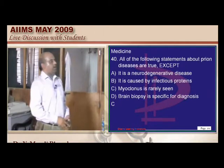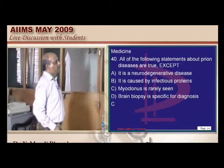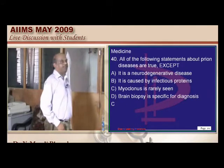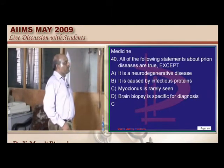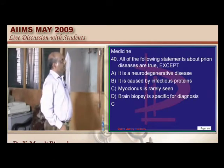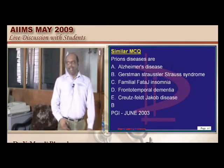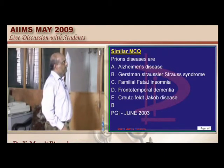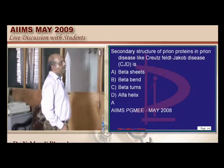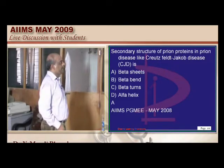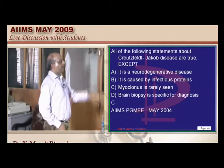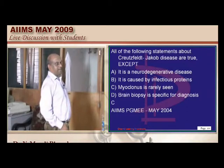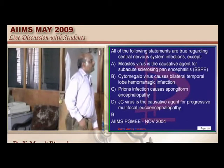Prion diseases — features include infectiousness and neurodegeneration. Brain biopsy shows vacuolation in prion disease. PGI June 2003: Gerstmann-Sträussler is a prion. Beta sheets are found in Creutzfeldt-Jakob disease. AIMS May 2004: brain biopsy is very specific and the disease is neurodegenerative in nature.